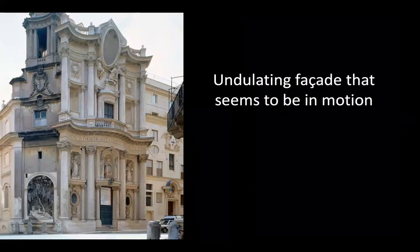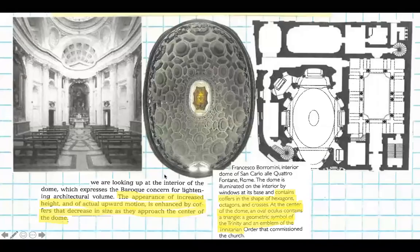You have this undulating facade that seems to be in motion — convex, concave, waving forms of the stone. The appearance of increased height and of actual upward motion is enhanced by the coffers, those recessed niches in the dome — we saw that first in the Pantheon — that decrease in size as they approach the center of the dome.